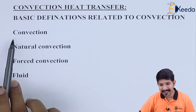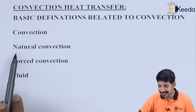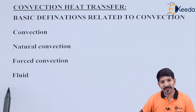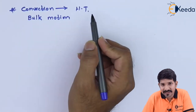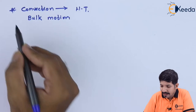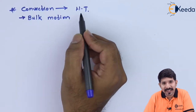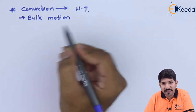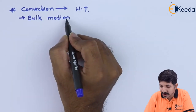The first thing is convection itself, then natural convection, then forced convection, and we will also talk about fluids. The convection heat transfer, in general, is a heat transfer where there is bulk motion of the fluid — heat transfer caused due to the bulk motion of the fluid.